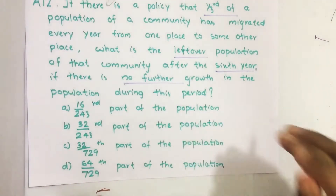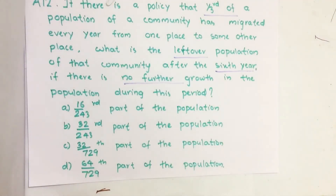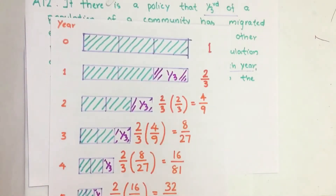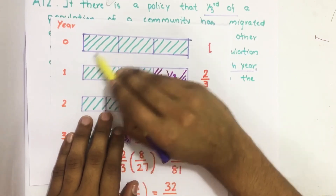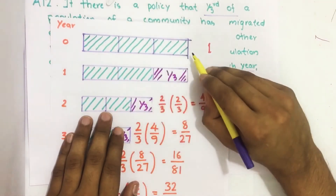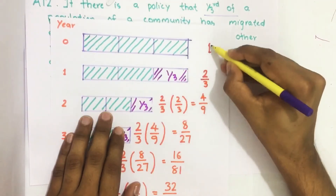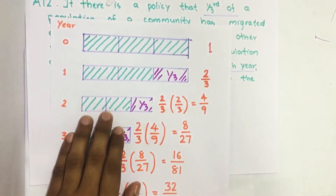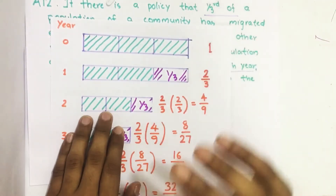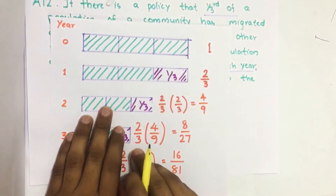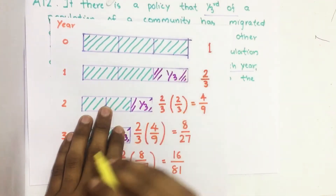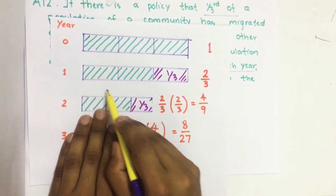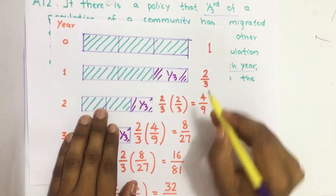Now let us see what is the leftover population of that community after the sixth year. Suppose this is the village where the community is living — in year zero, all the full population is there. Then after one year, one third of this population left this village, so the leftover population is two thirds.